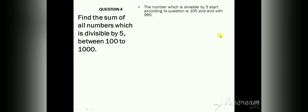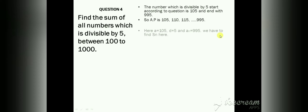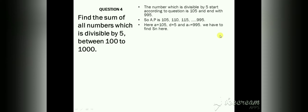The AP of this problem becomes: 105, 110, 115, and so on up to 995. Here a is equal to 105, d is equal to 5, and aₙ is equal to 995. We have to find the value of Sₙ. The question asks to find the sum of all numbers, so we need to find Sₙ.